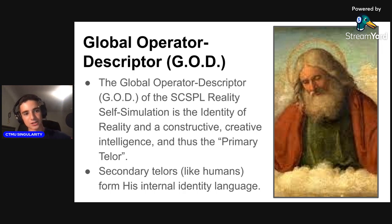Langen describes tellers as structurally complex syntaxes which can factorize telesis (actualize ontic potential) and have sufficient complexity to consciously generate internal representations of themselves and their relationships with the external environment. There are two strata of tellers: the global operator-descriptor (G.O.D.) of the SCSPL reality self-simulation, a constructive, creative intelligence whose ability and power we are unable to circumscribe from within his creation (called the mind of God colloquially), and secondary images of the G.O.D.—observer participants in the reality self-simulation such as human beings and other complex life forms which may arise in the history of the cosmos.